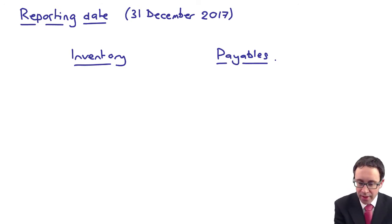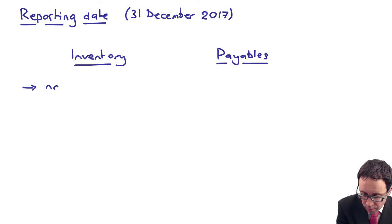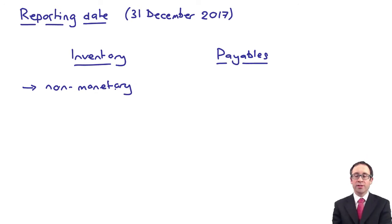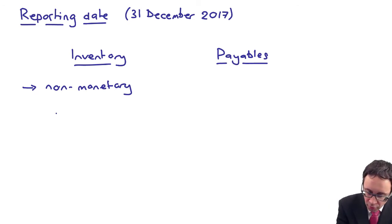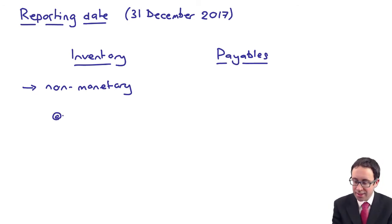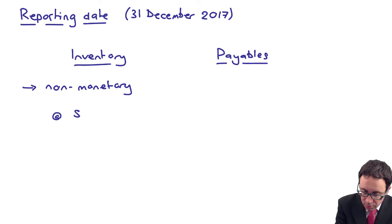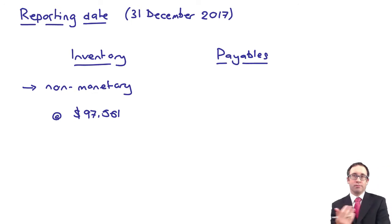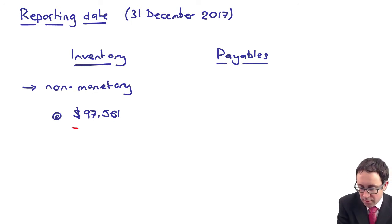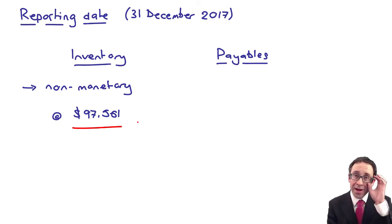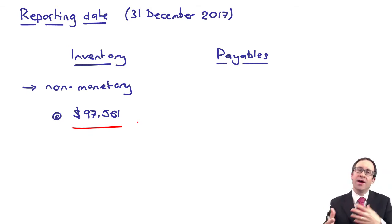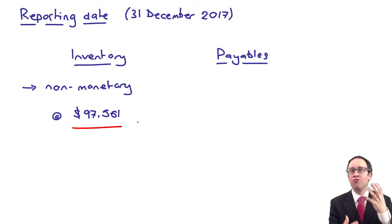Inventory is non-monetary, so we do not retranslate. We leave it at the historic rate of $97,561 — there's nothing to change. It's non-monetary because it's not readily convertible into cash; you have to sell it and then collect the cash from your customer.